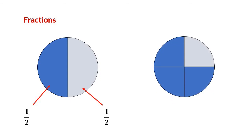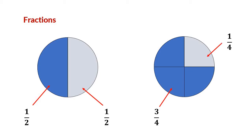Now look at the second circle. It is divided into four equal parts. There are three parts out of four which is colored in blue. We can write it as 3 by 4. The last part is 1 out of 4 and we can write it as 1 by 4.